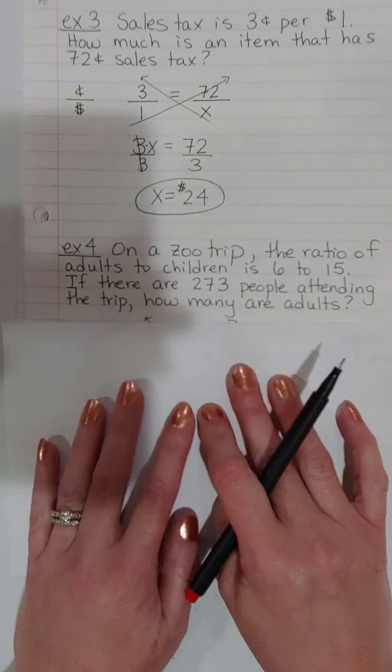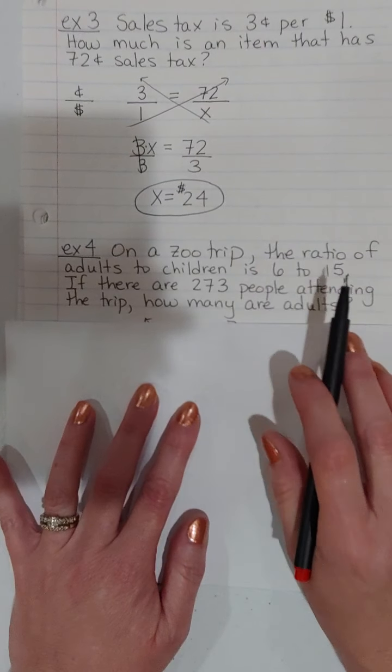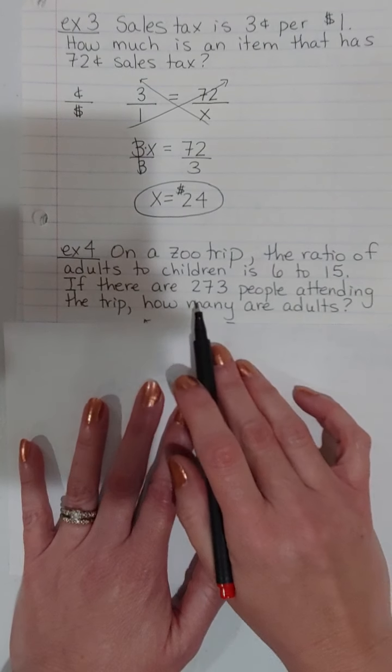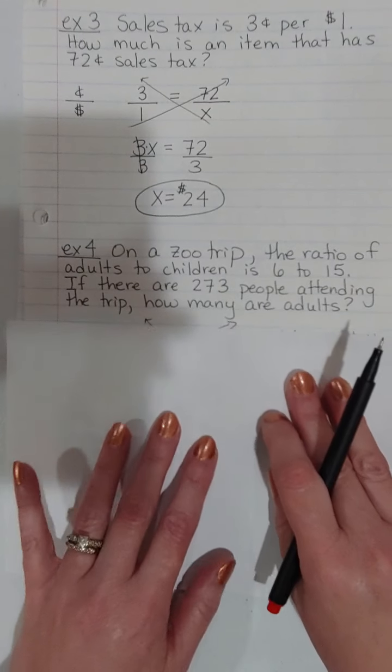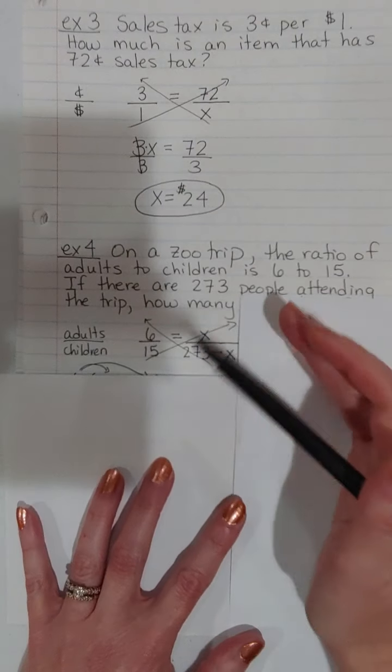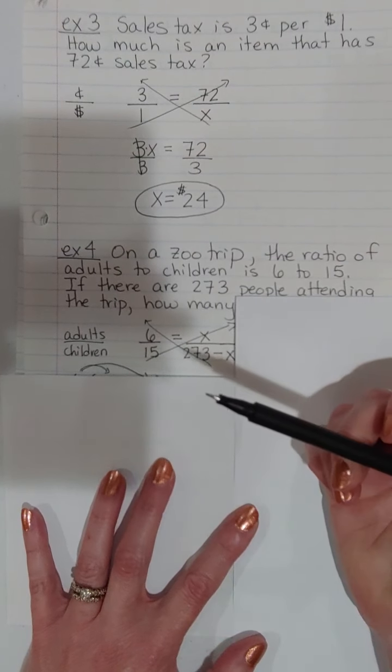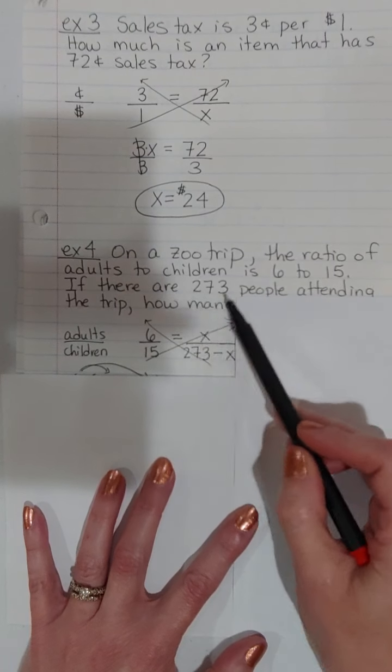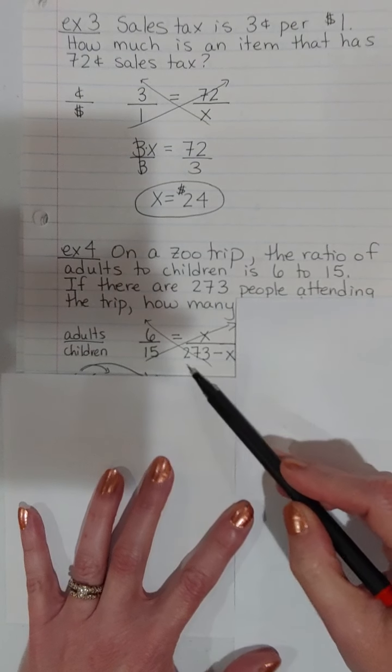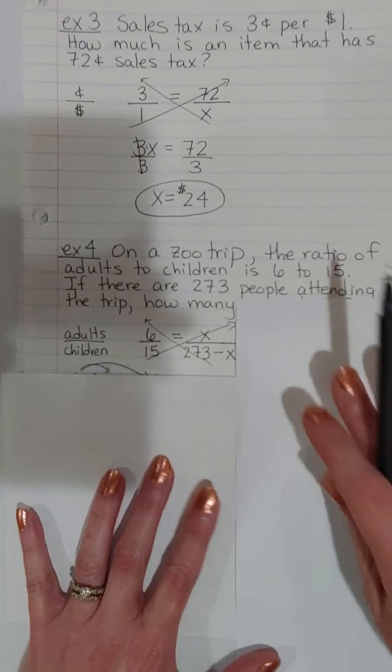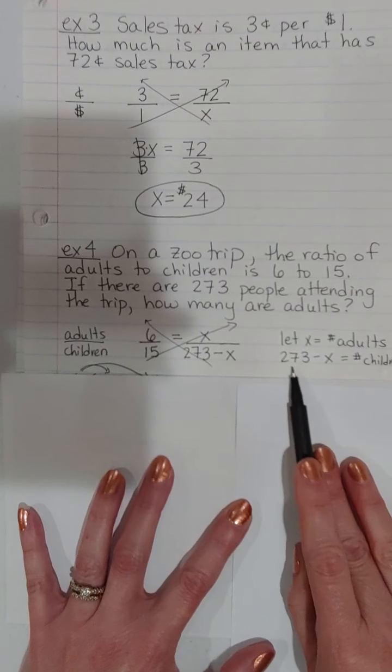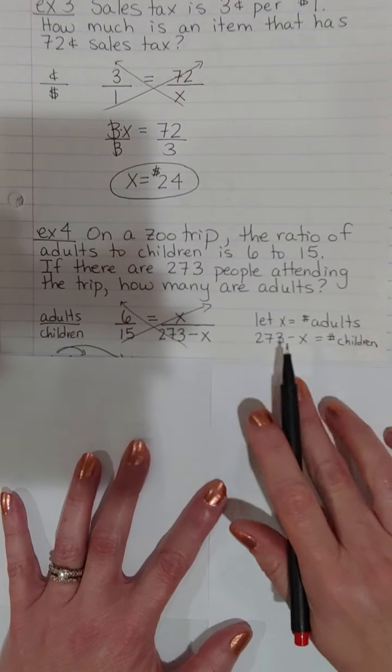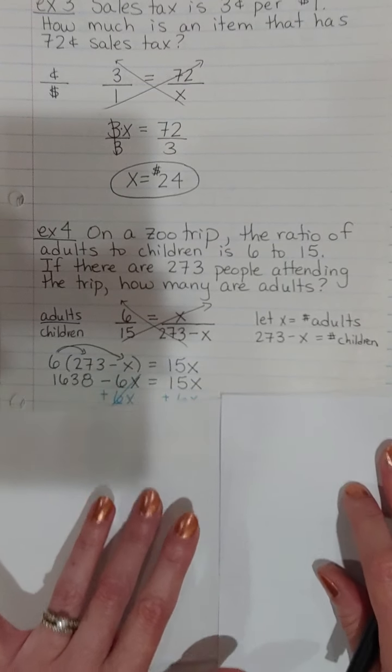Next one, also a proportion. On a zoo trip, the ratio of adults to children is six to 15. Remember, a ratio is just a fraction. There's 273 people attending. How many are adults? So once again, we have this whole make sure that my fraction stays in the correct order. Adults over children. So adults, children. Now here, there's 273 people total. So if this is the number of adults, the kids must be the rest of the 273. So that's why I did the 273 minus X. So I said that X is the adults, then the children must be the total minus how many adults there are. So I know that's kind of an odd thing to have to do, but that's a common way that you would do it if you were given a total.